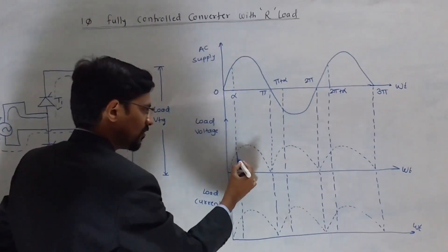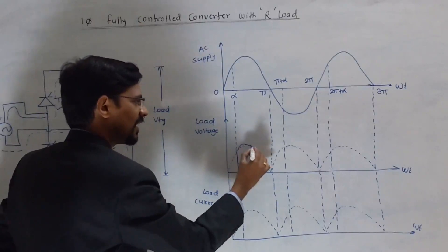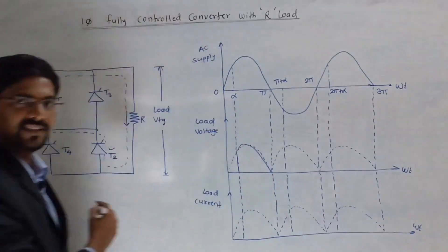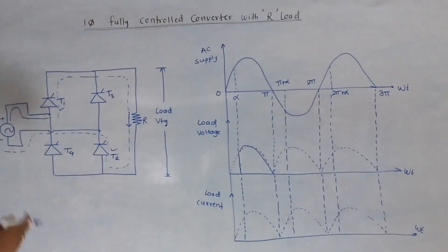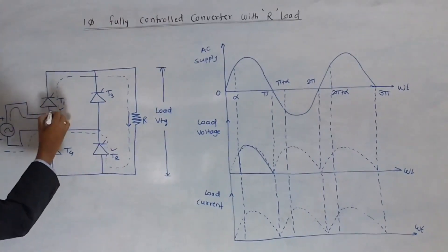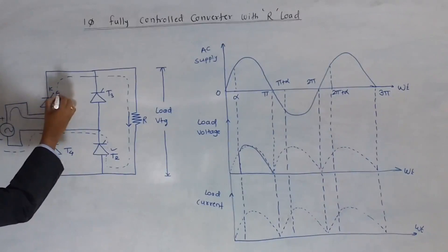At the output side, but you are going to consider firing angle because this is an SCR. If you consider the SCR, then it has 3 terminals. First one is anode, then second one is cathode and third one is gate.